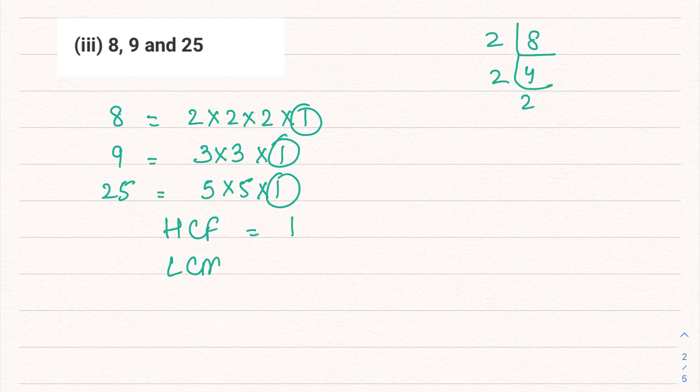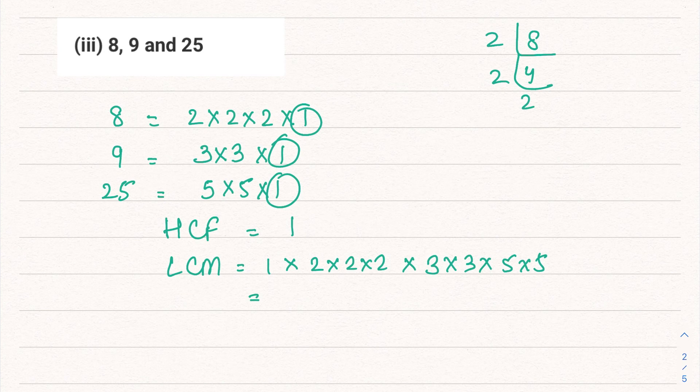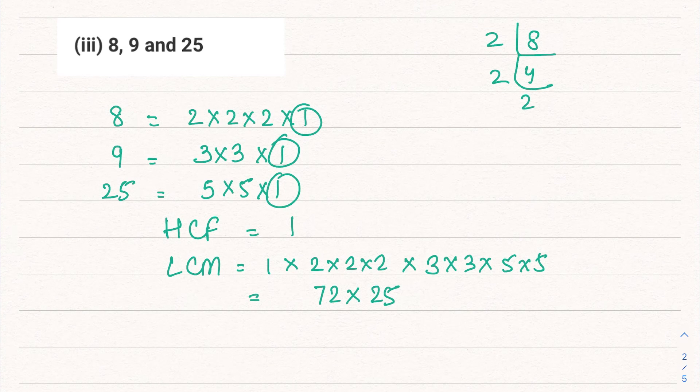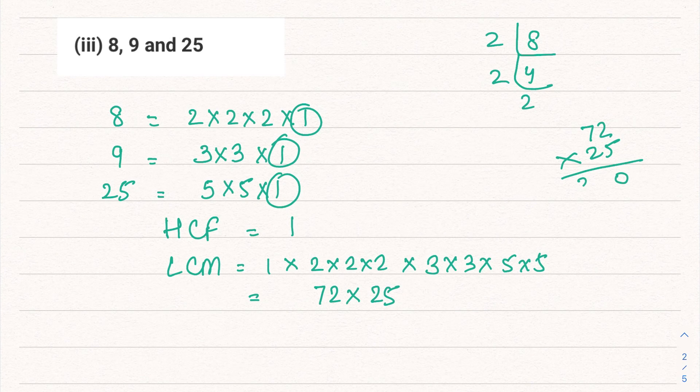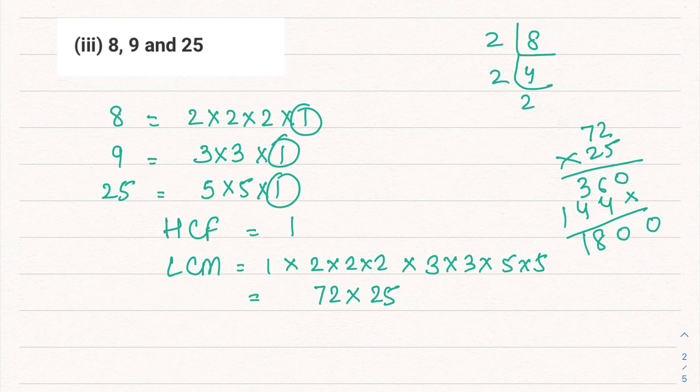Let's check the LCM. LCM will be 2 × 2 × 2 × 3 × 3 × 5 × 5. So that is 8 × 9 = 72. 72 multiplied by 25, let's check. So here LCM is 1800.